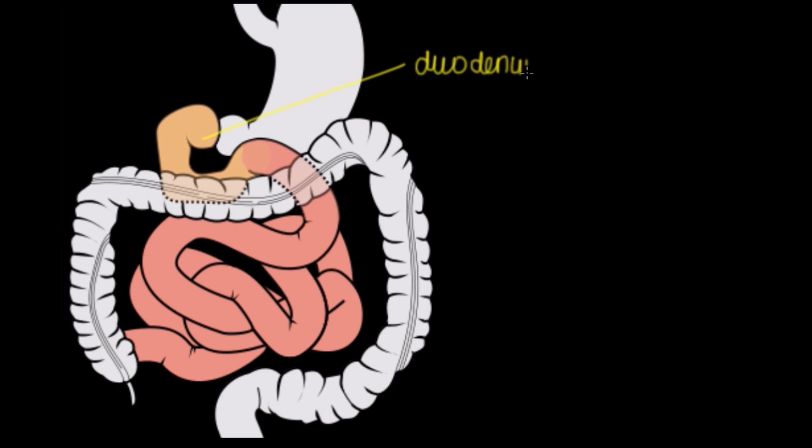This receives the chyme that just got processed in the stomach and it's the part of the entire GI tract where the most digestion occurs. The most breakdown of food products will happen in the duodenum.